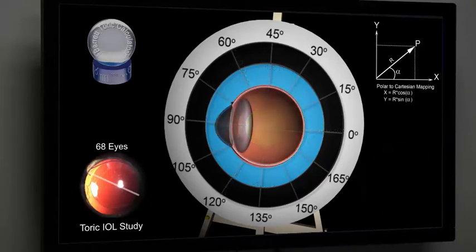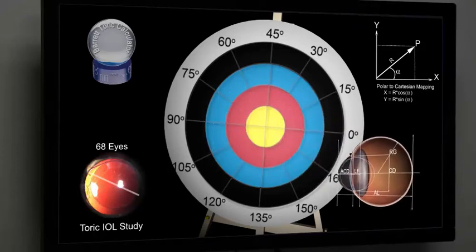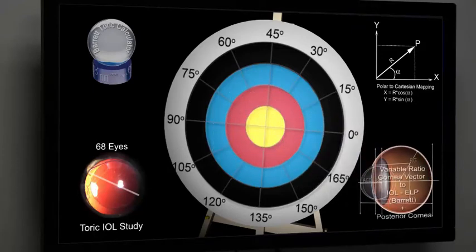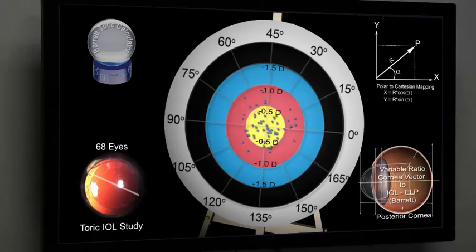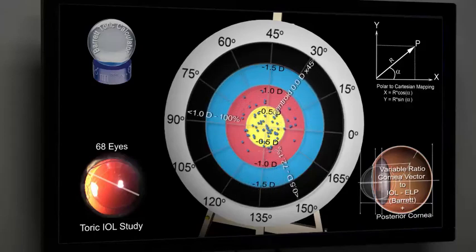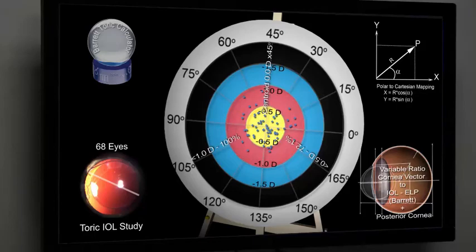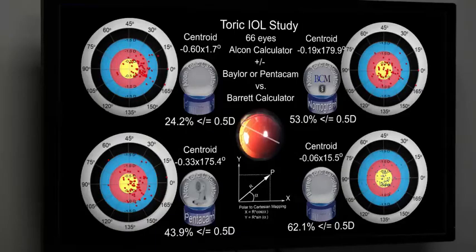The Barrett calculator uses the Universal Formula to calculate the effective lens position and the corneal vector of the intended toric IOL, as well as a value for the posterior cornea. The centroid for the new calculator was essentially zero, with 72% of patients within half a diopter of predicted astigmatism. The new calculator proved to be more accurate, even when the posterior cornea was taken into account with the Baylor nomogram or actually measured with the Pentacam.